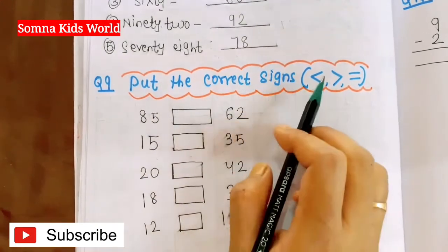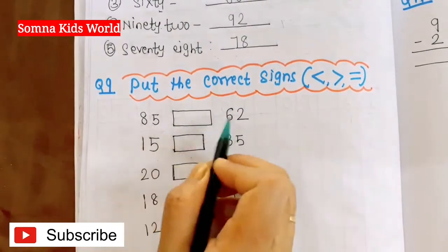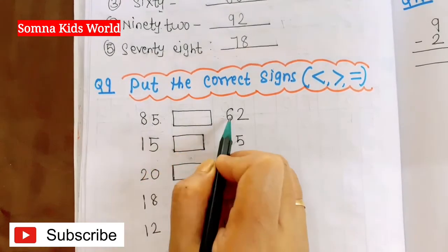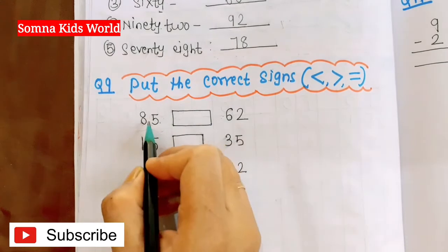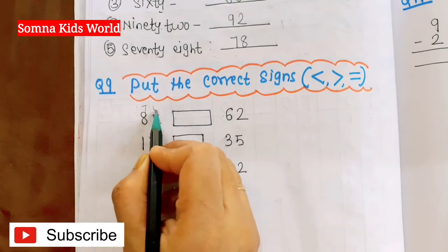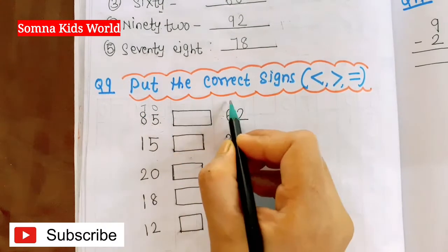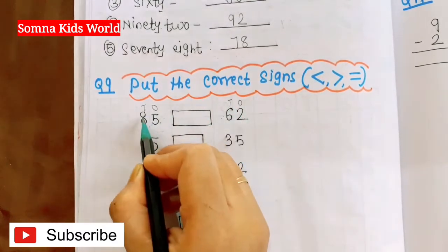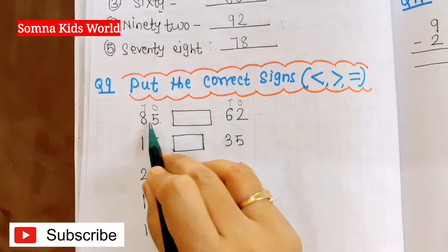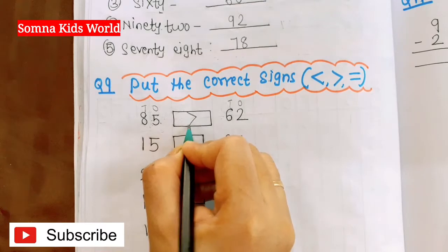Next question: 'put the correct sign — greater than, smaller than, or equal to.' To compare, look at the tens side first. For 85 and 62 — tens are 8 and 6, so 8 is greater, meaning 85 is greater than 62. For 15 and 35 — 35 is greater. For 20 and 42 — 42 is greater.